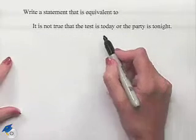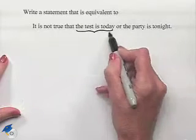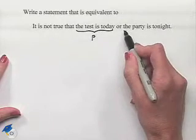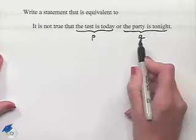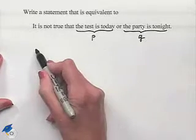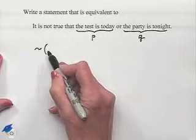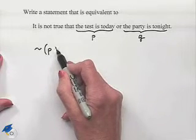We're going to designate the test is today as statement P. The party is tonight can be statement Q. We can write this then in symbolic format as: it is not true that we have P or Q.